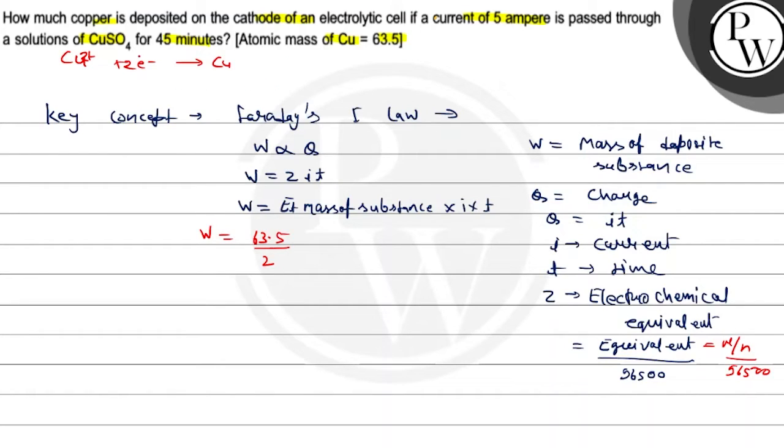So this N is equal to 2, so Z value is equivalent mass divided by 96,500.